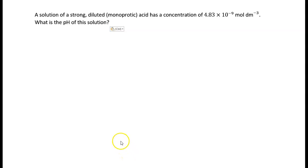In this particular example we are dealing with a strong acid, this time it is diluted. This acid, which is a monoprotic acid, means it can only release one proton. It has a concentration of 4.83 times 10 to the minus 9 mole per cubic decimeter. So it's a very dilute acid solution and we want to find out what is the pH of this solution.